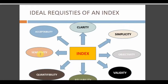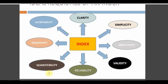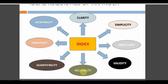Sensitivity means the index should be able to detect very small changes in both directions — whether very high or very low. Quantifiability means the index must be expressed in numbers so statistical analysis can be done. Reliability is assessed as inter-examiner and intra-examiner reliability, calculated using kappa statistics; it should be more than 0.8 or 80%. Training and calibration must be done before the actual examination.